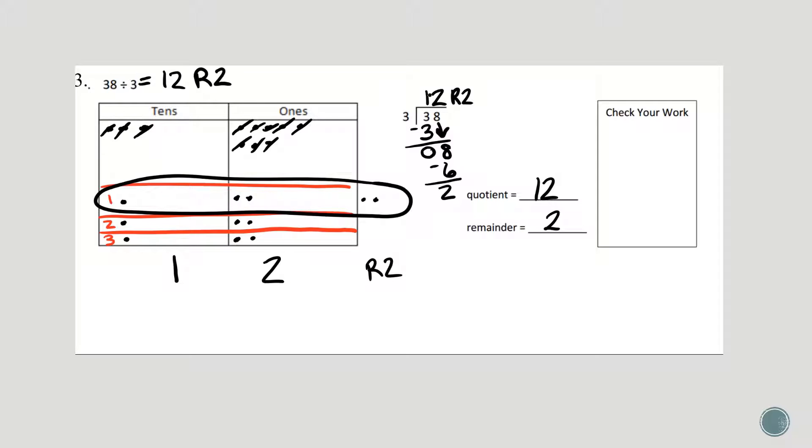So I'm going to start with my whole number quotient, 12 times my divisor, 3. 3 times 2 is 6, and 3 times 1 is 3. So right now I only have 36, and my goal, remember, is to get to my dividend, 38.